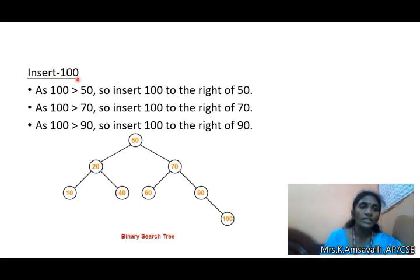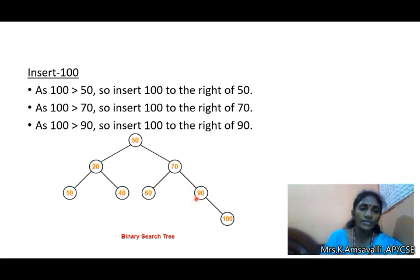Insert 100. Element 100 is compared to the root element — it is greater. Go right to 70, then 100 is greater than 70. Go right to 90, then 100 is greater than 90. So 100 is inserted to the right of 90.